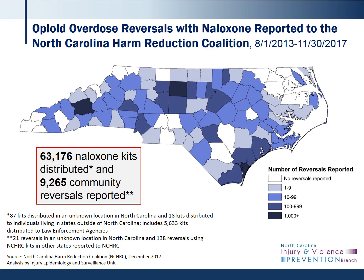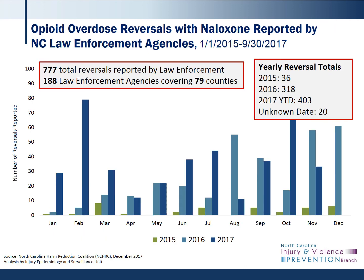North Carolina has one of the largest community naloxone distribution networks in the entire country thanks to the North Carolina Harm Reduction Coalition. Since August of 2013, they've distributed over 60,000 naloxone kits across the state. This map shows the number of reversals reported to the North Carolina Harm Reduction Coalition by county. Darker shaded counties mean more reversals have been reported. Over 1,000 reversals apiece have been reported from Buncombe, Guilford, and New Hanover County. The North Carolina Harm Reduction Coalition also collects data on naloxone reversals performed by law enforcement agencies. Since 2015, 777 reversals by law enforcement have been reported. There may be additional reversals that weren't reported to the Coalition, but without a centralized statewide system, it's difficult to get the complete picture.